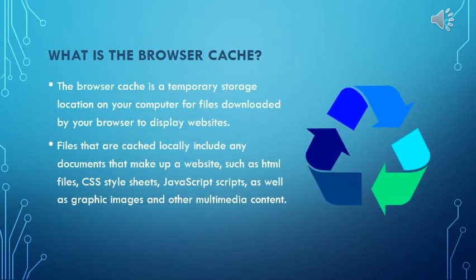The browser cache is a temporary storage location on your computer for files downloaded by your browser to display websites. Files that are cached locally include any documents that make up a website, such as HTML files, PHP files, CSS stylesheets, JavaScript scripts, graphic images, multimedia content, GIF files, and JPEG files. All of that gets downloaded into the cache when you look at a web page.